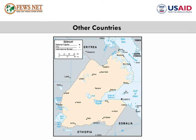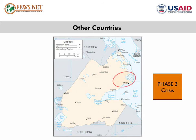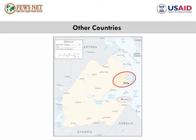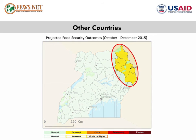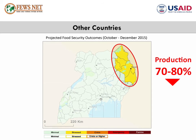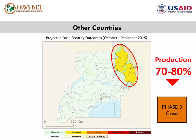A few brief comments on other countries. In Djibouti, following two successive poor seasons, IPC Phase 3 crisis is anticipated through December among poor households in southeastern and Obock pastoral areas. Additional monitoring of Djibouti City is also needed following reports of increases in the number of children admitted to nutrition treatment centers. In Uganda, main season harvests in Karamoja are expected in September, three months later than normal. Preliminary estimates suggest production is likely to be 70–80% below average. In areas where production was extremely low, Phase 3 crisis outcomes will prevail through December.